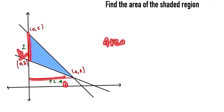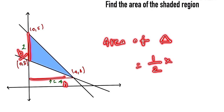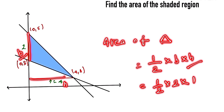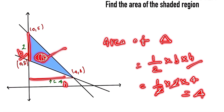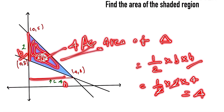The area of the triangle is given by one-half times base times height, which is one-half times 2 times 4. The 2s cancel out, giving an answer of 4. So the area of the shaded region is 4, and this is our final answer.